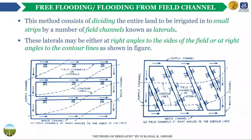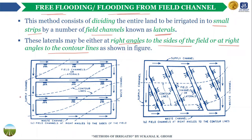The first type of controlled flooding is flooding from field channels, also known as free flooding. In this method, the land to be irrigated is divided into small strips by a series of field channels, supplied with water from the supply channels. These field channels are also known as laterals. The laterals may be aligned either at right angles to the sides of the field or at right angles to the contour lines.